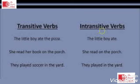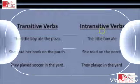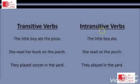More examples of transitive and intransitive verbs: In the transitive examples there is a subject, verb, and object; in the intransitive examples there is no object. Transitive: 'The little boy ate the pizza,' 'She read her book in the park,' 'They played soccer in the yard.' Intransitive: 'The little boy ate,' 'She read in the park,' 'They played in the yard.'